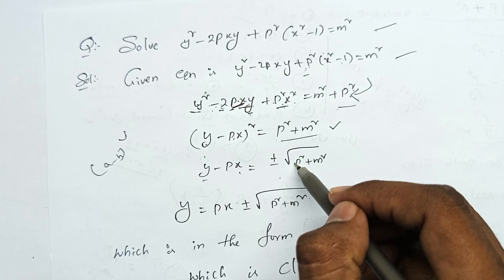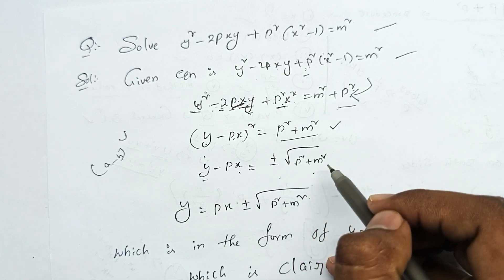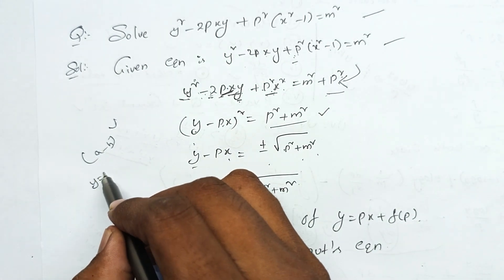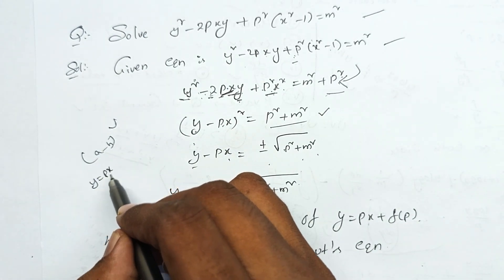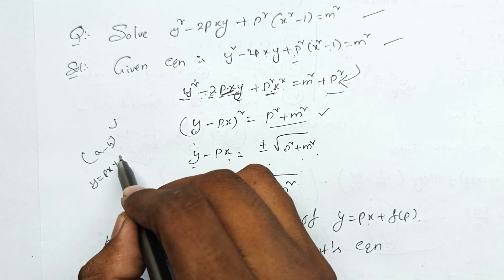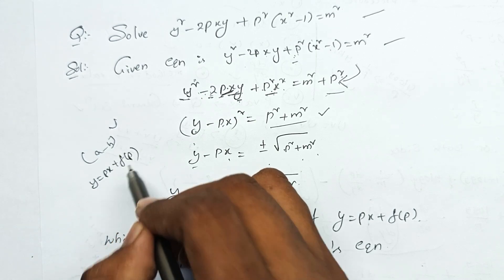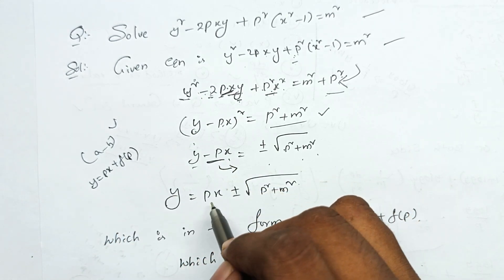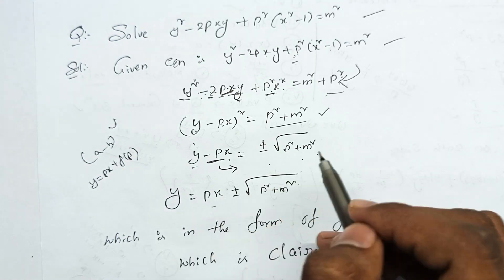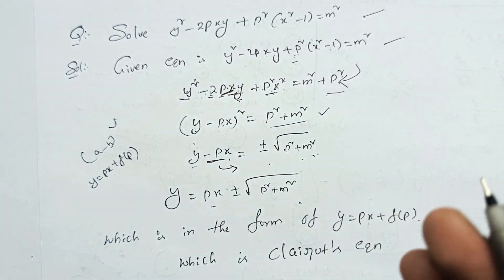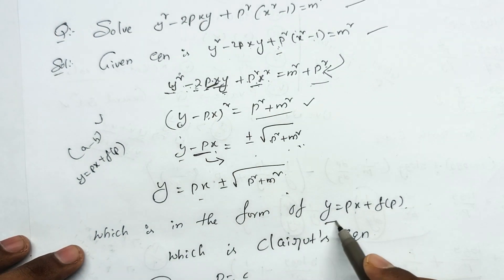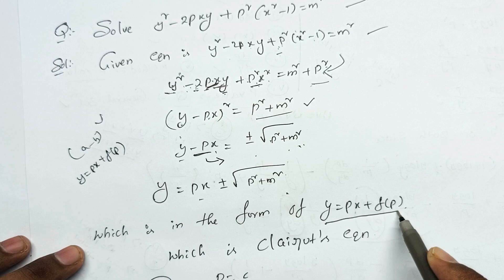Taking the square root gives plus or minus root over p squared plus m squared. Using the formula y equals px plus f(p), this is in the form of a Clairaut equation: y equals px plus f(p).